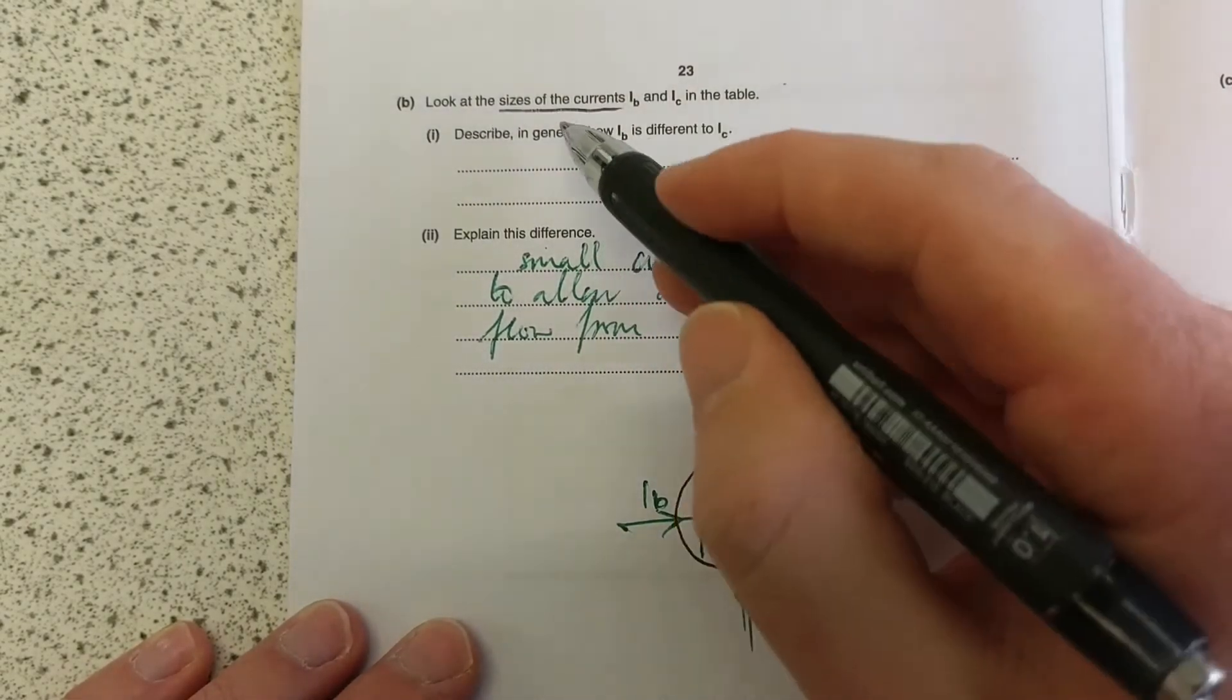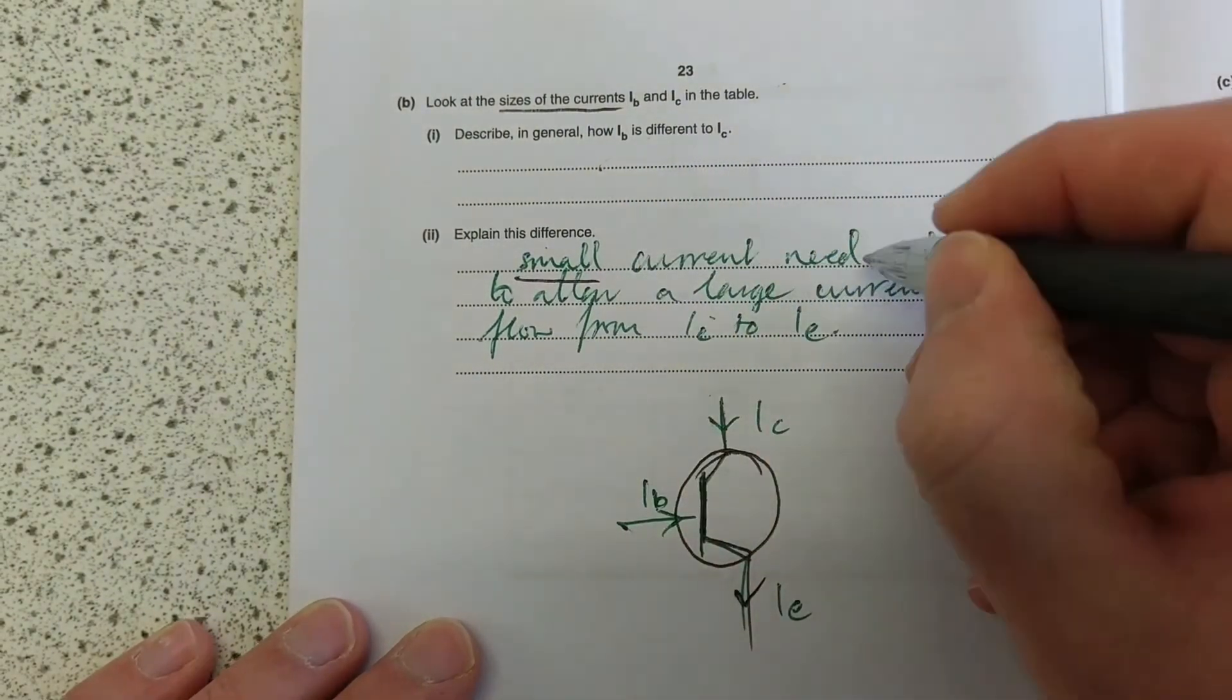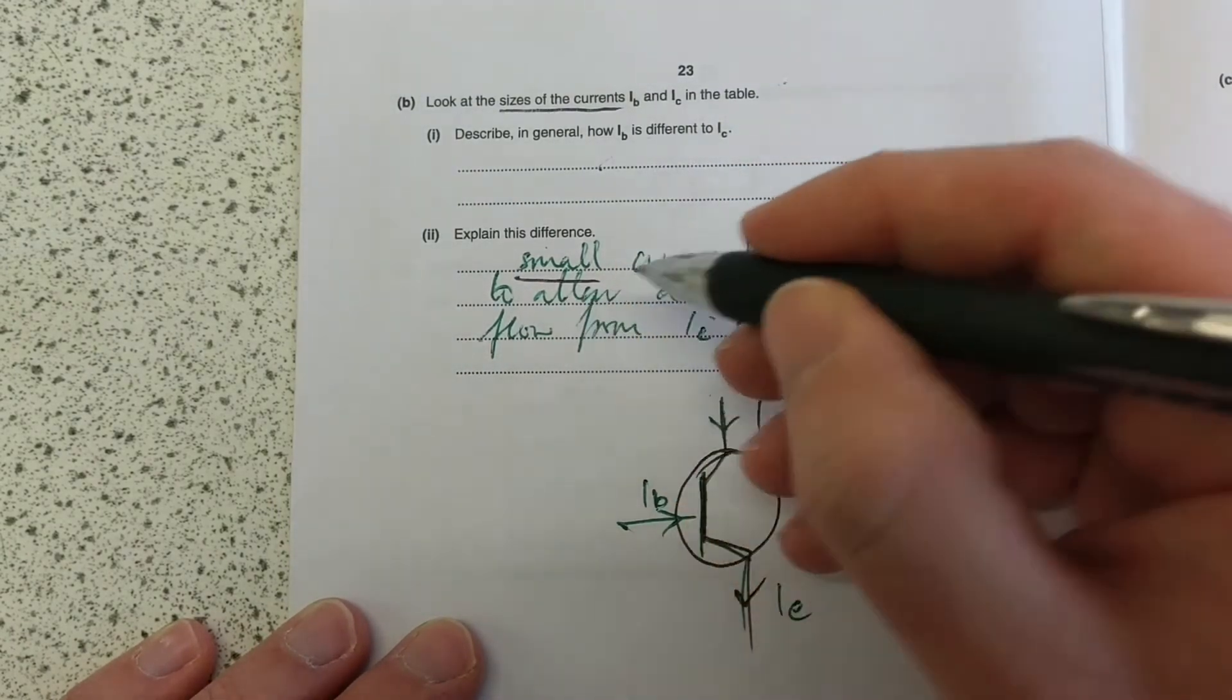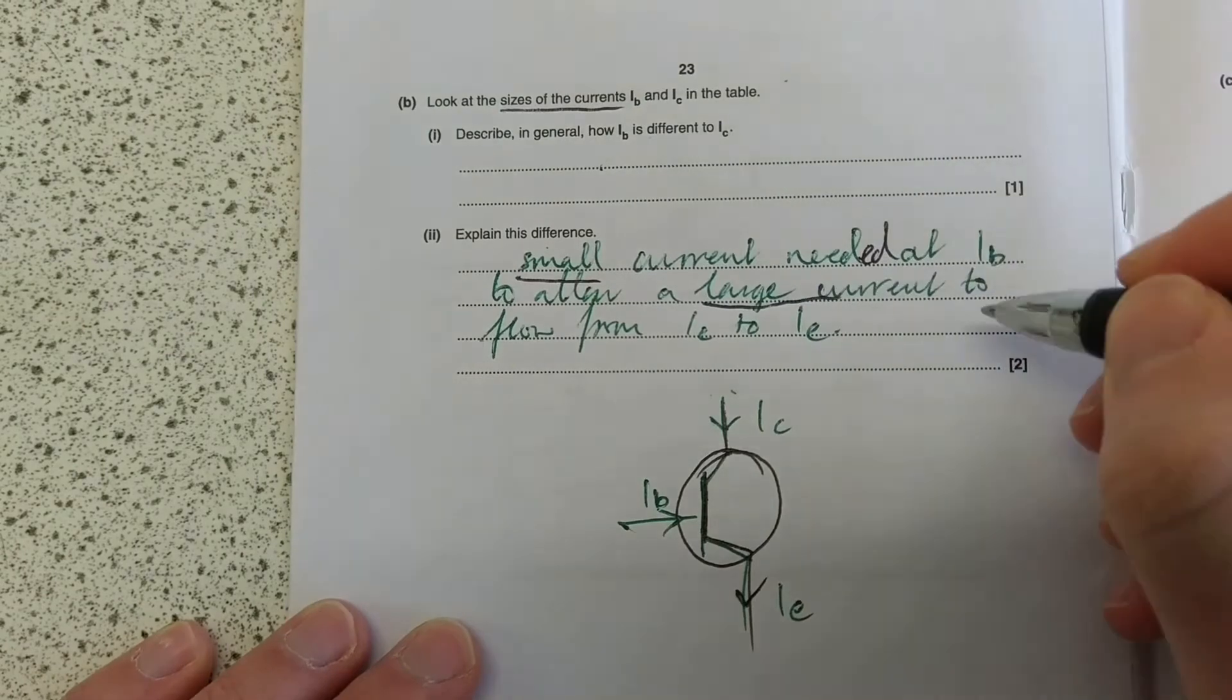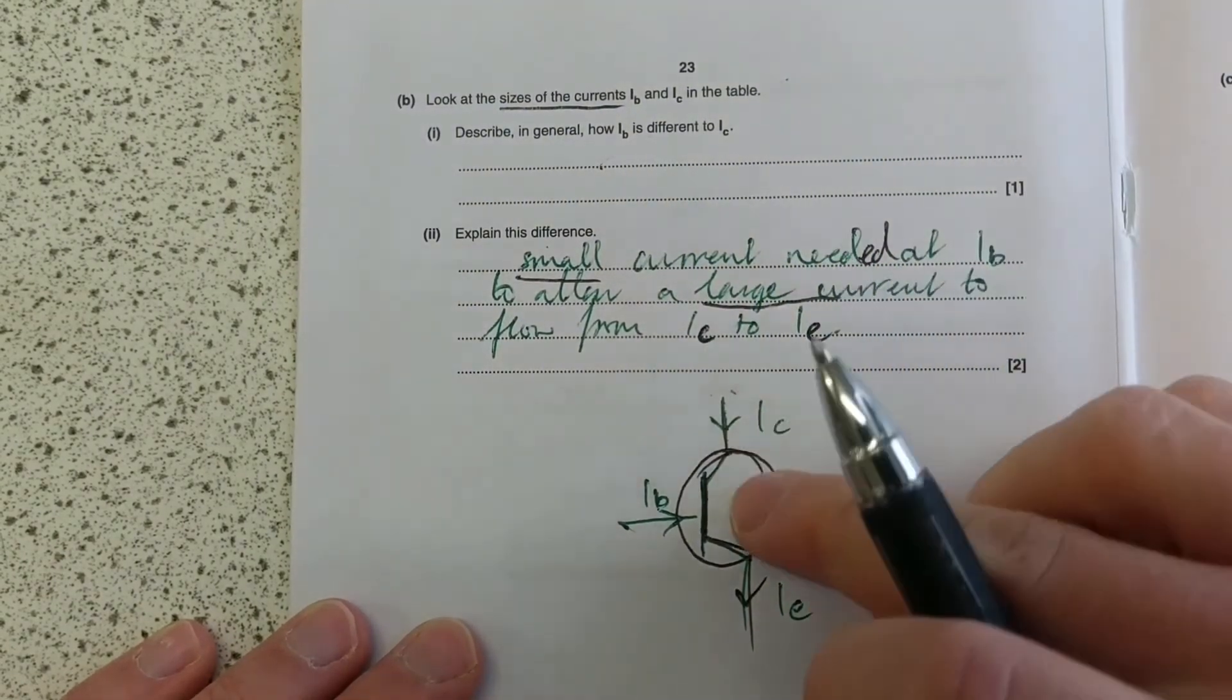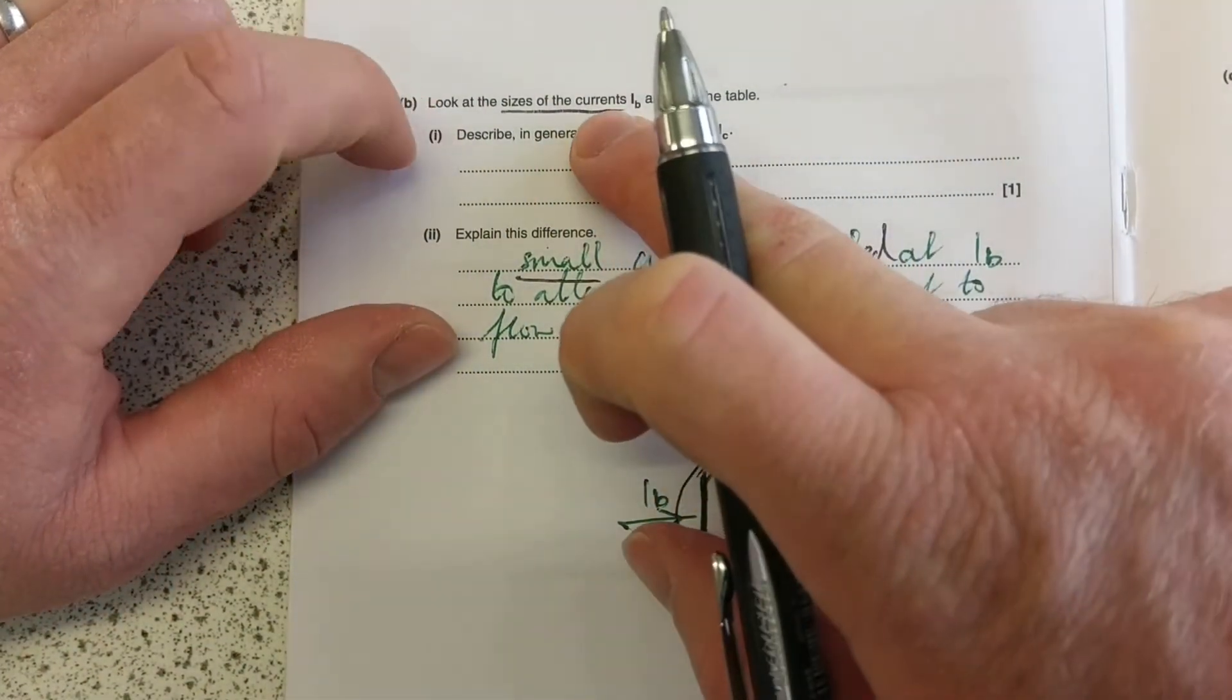So because it said look at the size of the current, you had to say, explain this difference. Small current is needed at the base IB to allow a large current to flow from IC. So essentially, we need to get the size in there because we've been told to do it.